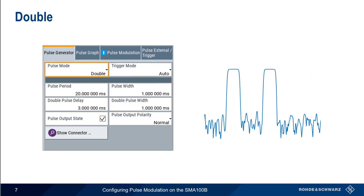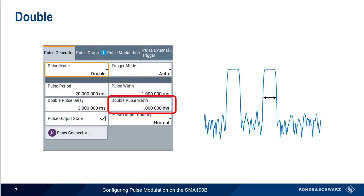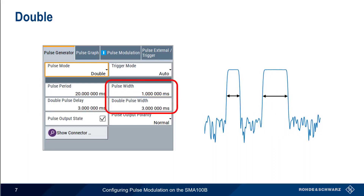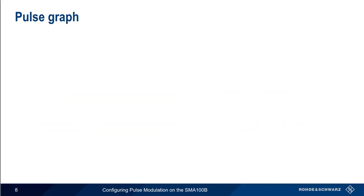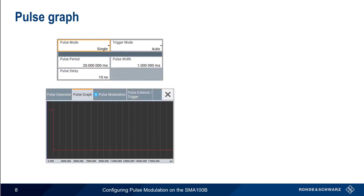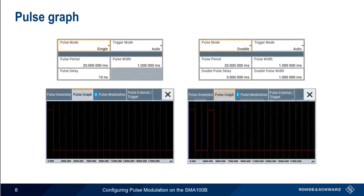In Double Pulse Mode, pairs of pulses are sent. Because we're sending two pulses each time, we now have Double Pulse Delay, which is the time from the start of the first pulse to the start of the second pulse in the pair. In addition, we need to define the width of the second pulse. Note that the width of these two pulses can be different.